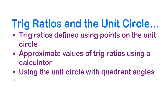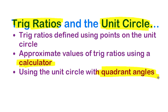We're going to look at defining trig ratios using the unit circle and making connections between the points on that circle and the sine, cosine, and tangent of the angle. We're also going to look at how you can work with your calculator and make that connection, as well as for certain angles — quadrant angles on the axes — how you can do this without your calculator.